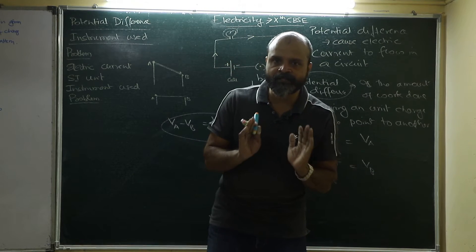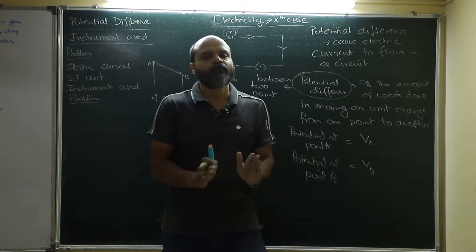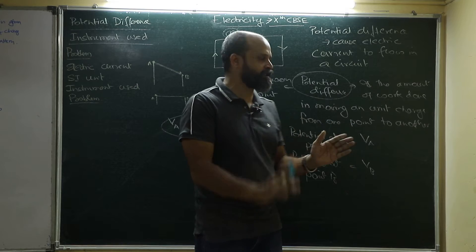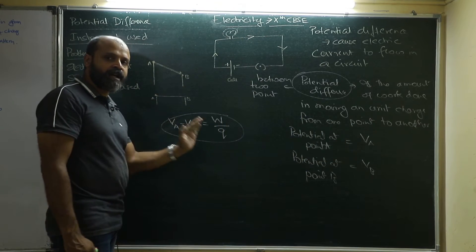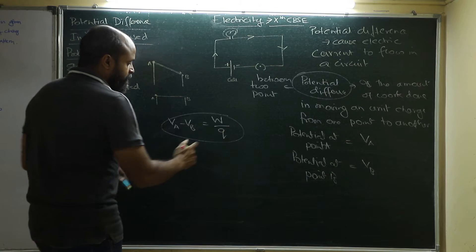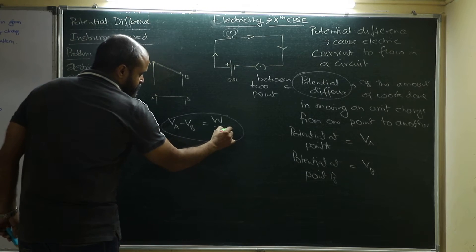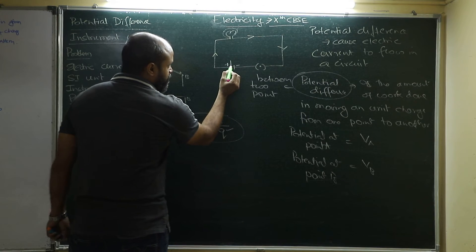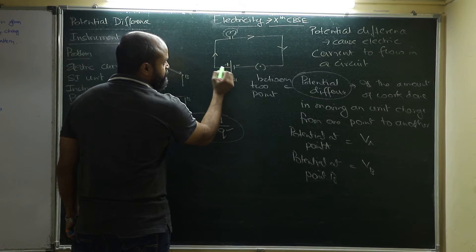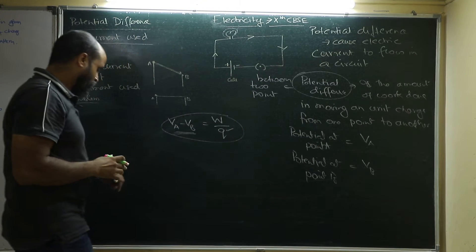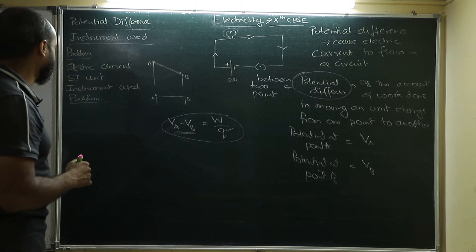This is how we define potential difference, and this is the reason why electric current flows. Till the time there is a potential difference, current will flow through a circuit. If the potential difference ceases to exist, then there will be no current flowing through the circuit. The reason why charges move is because of the difference in potential — there is a difference between the two plates and that is why current is flowing through the circuit.